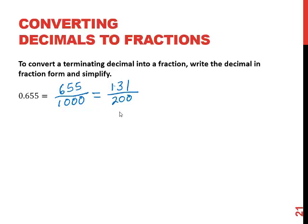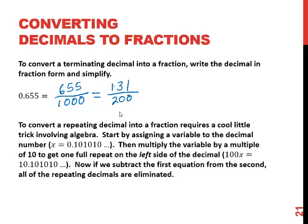To convert a repeating decimal into a fraction takes a little bit of trick using algebra. What we'll do is start by assigning a variable to the decimal number. For example, x equals 0.101010. This is assuming our repeating decimal is 10, 10, 10 and so on.